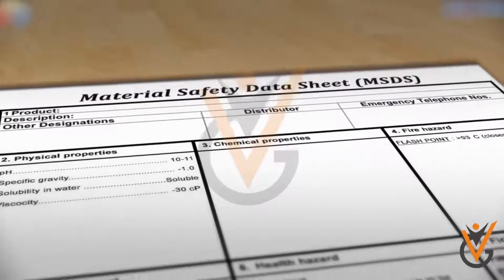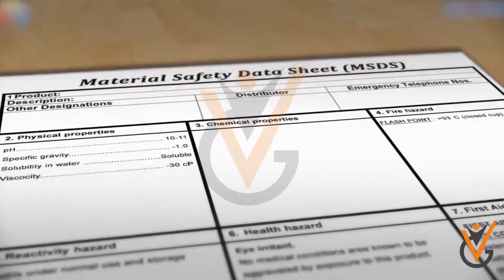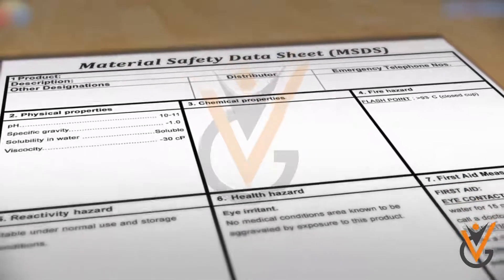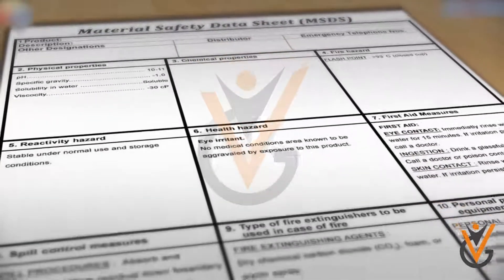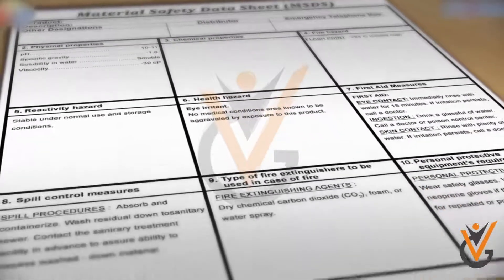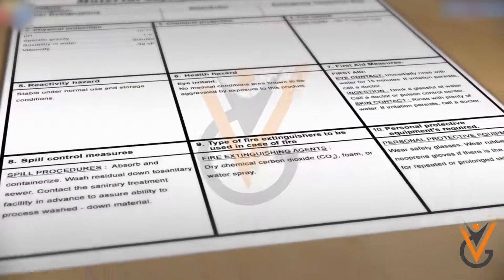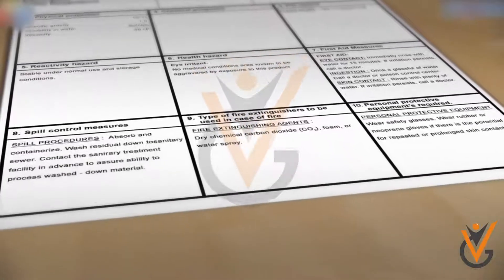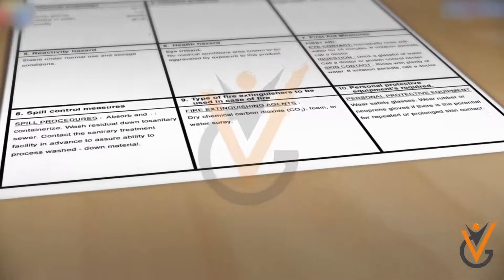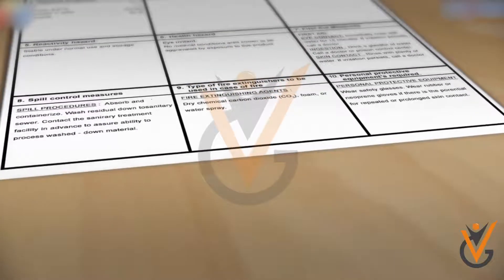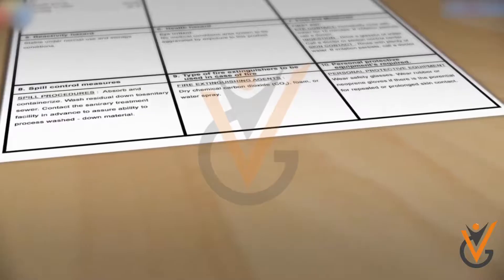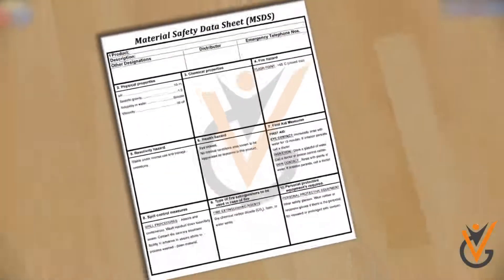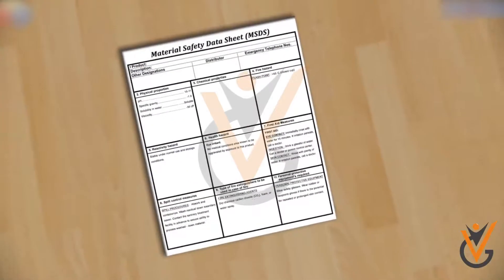Material safety data sheet provides basic information on a material or chemical product. It describes the properties and potential hazards of the materials, how to use it safely, and what to do in an emergency.